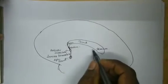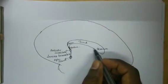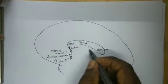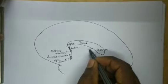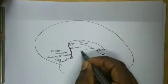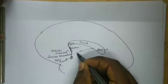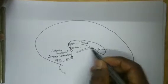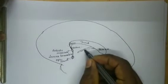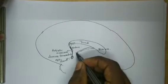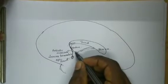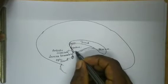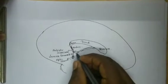From the anterior end of the splenium, there is white matter — again a commissure fiber which is running postero-anteriorly.